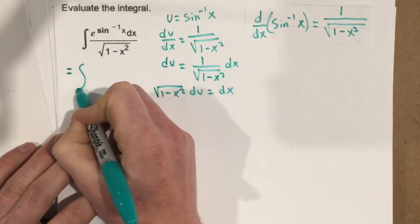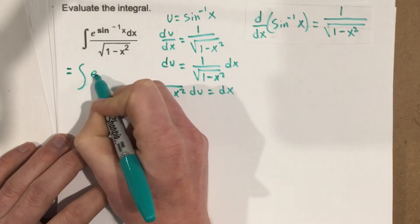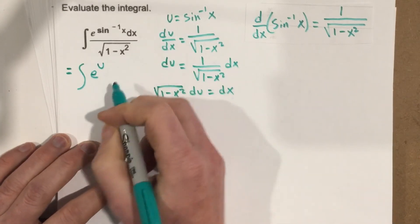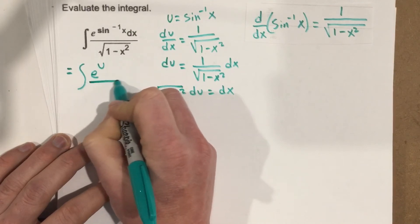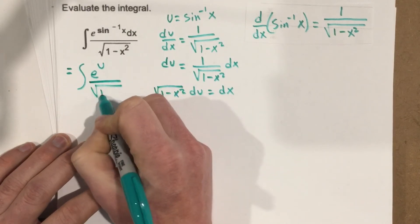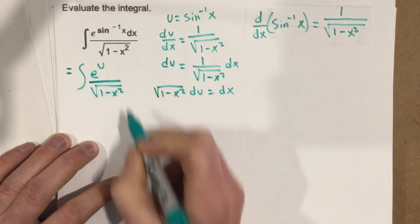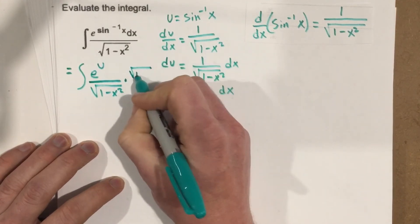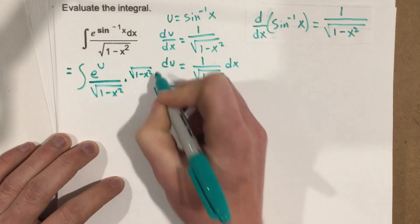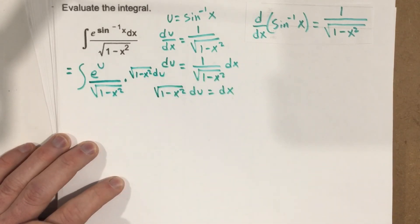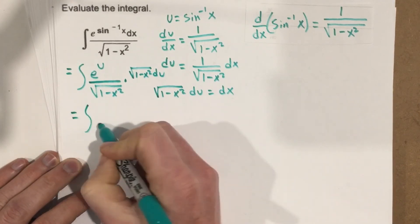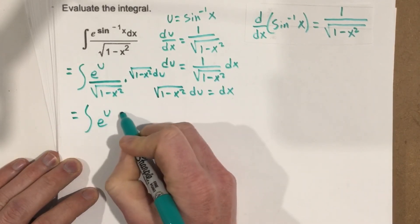That's the integral, so we'll have e to the u, right, because our sine inverse was u, over root 1 minus x squared times root 1 minus x squared du. And you can see that those cancel, and we're left with integral e to the u du.